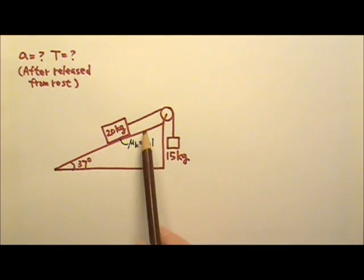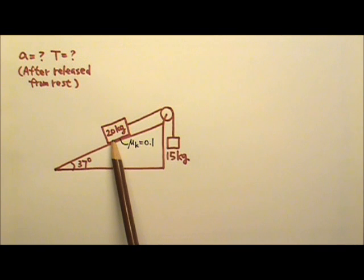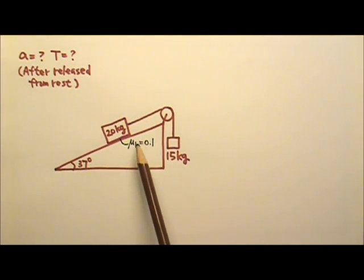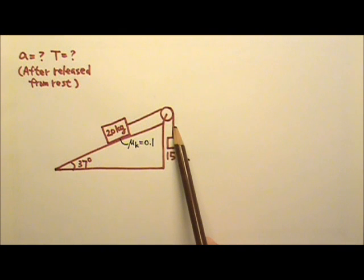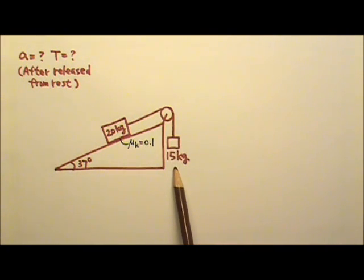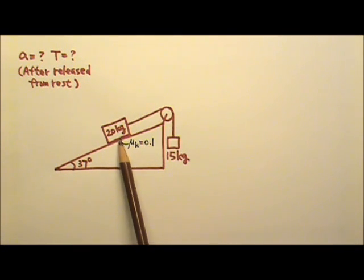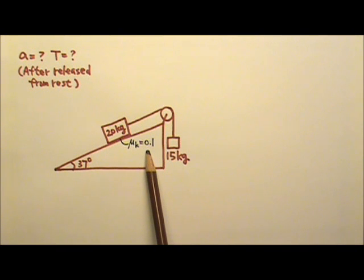We have this assembly here. The 20kg box is on a 37 degree incline. The string goes over the pulley with a 15kg box hanging on the other side. The coefficient of kinetic friction mu k between the box and the incline is 0.1.